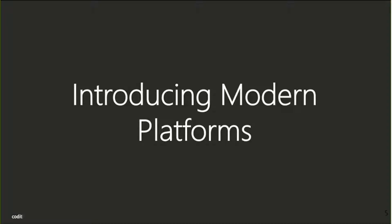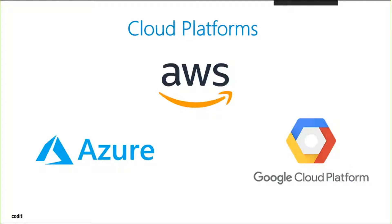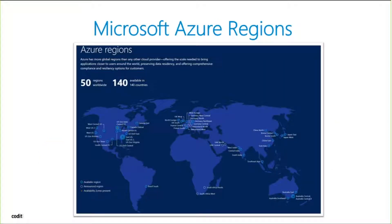If you look at modern platforms, there are of course the three big ones you've probably heard of: AWS, Azure, and Google Cloud Platform. They control the market and are investing heavily in their platforms. Another one, perhaps less known but also trying to enter the cloud market, is IBM with their Watson offering in machine learning and IoT. Microsoft Azure stands out with about 50 regions worldwide, as you can see in this overview of data centers, even some with availability zones providing more availability within a region — meaning multiple data centers within a region. They're available in over 140 countries worldwide.